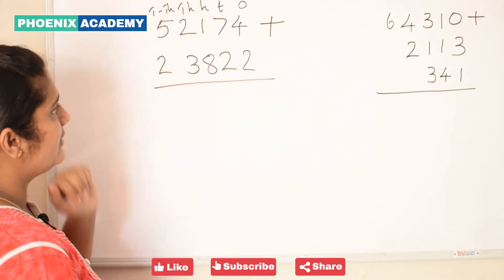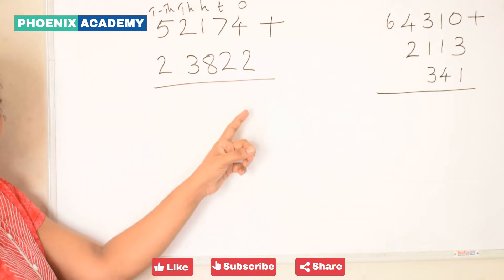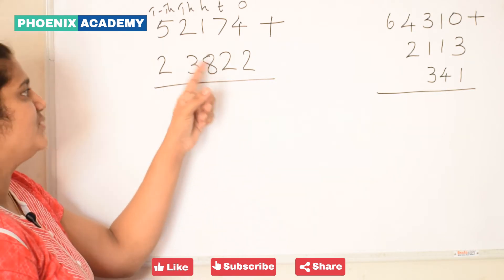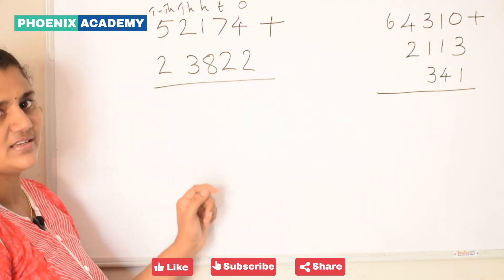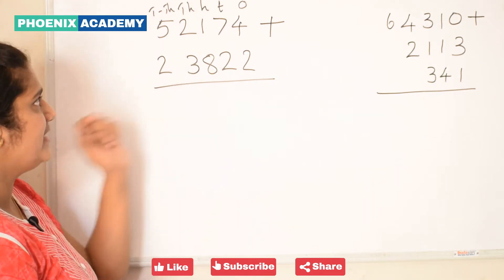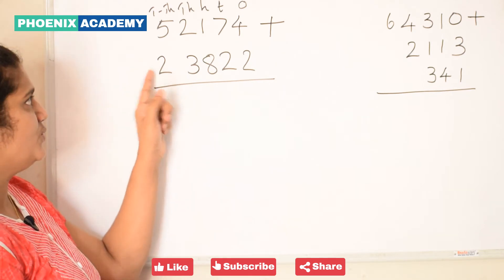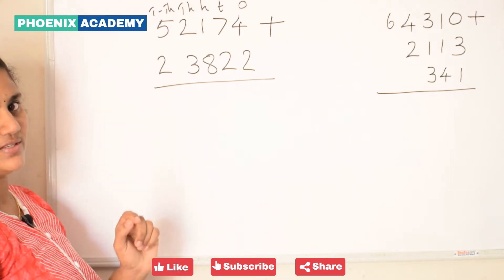23,822 is 2 ones, 2 tens, 8 hundreds, 3 thousands, and 2 ten-thousands.